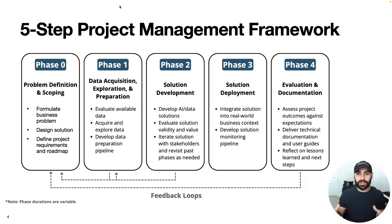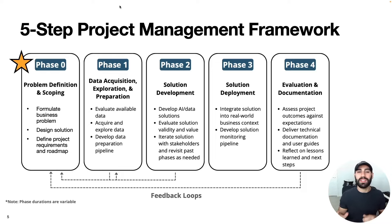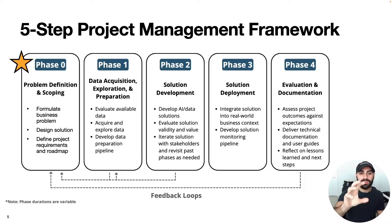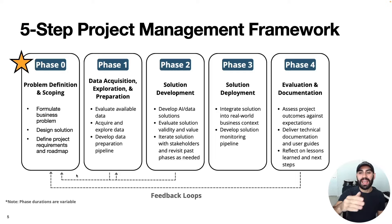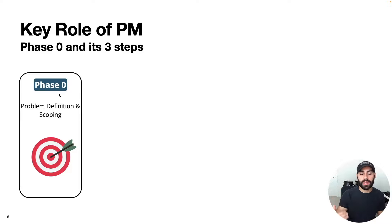While the project manager is ultimately responsible for the successful implementation of the project and ensuring that each of these phases happens, the key contribution of the project manager is phase zero. Because if phase zero is not done properly, it's going to cause problems in every subsequent phase of the project. This brings us to the key role of the project manager: phase zero, the problem definition and scoping.